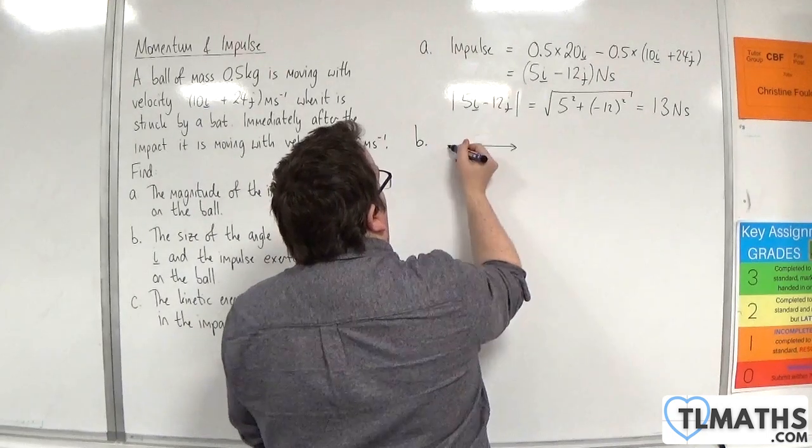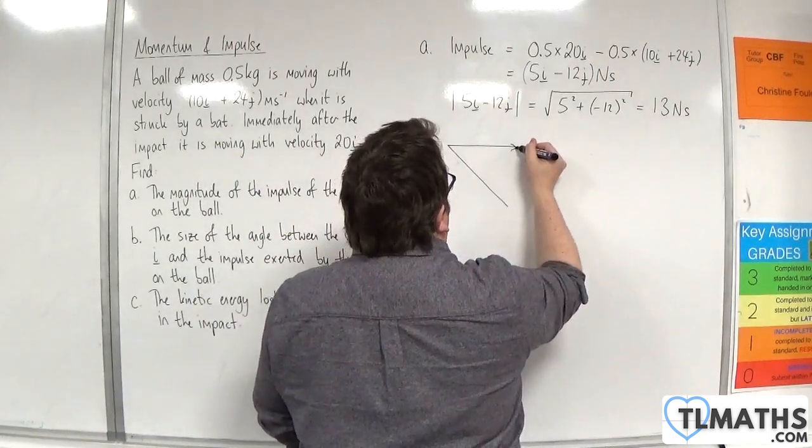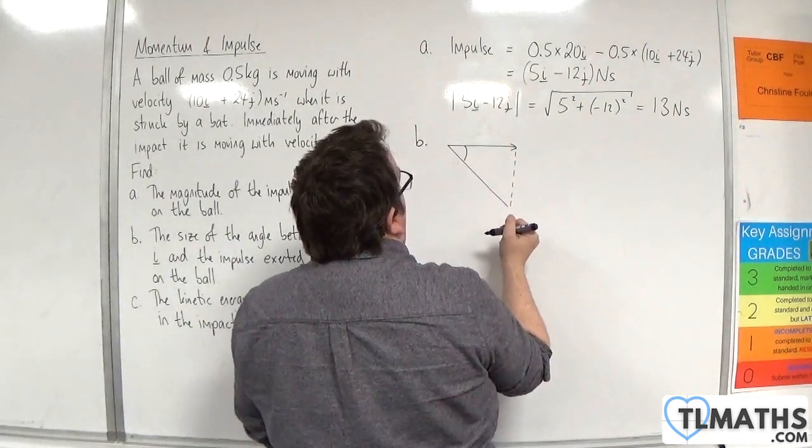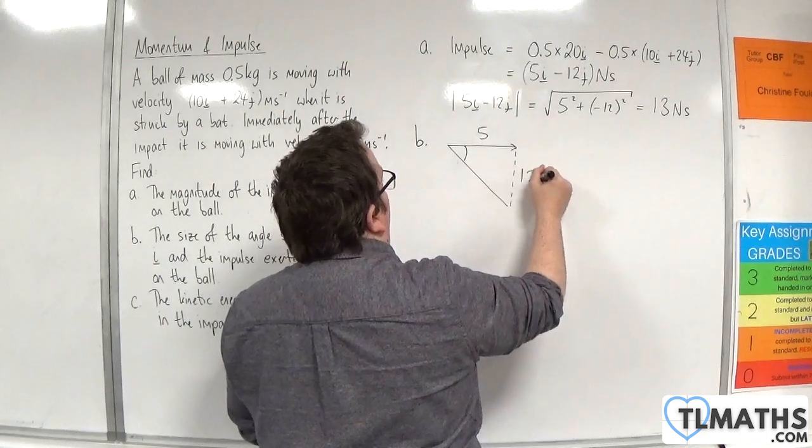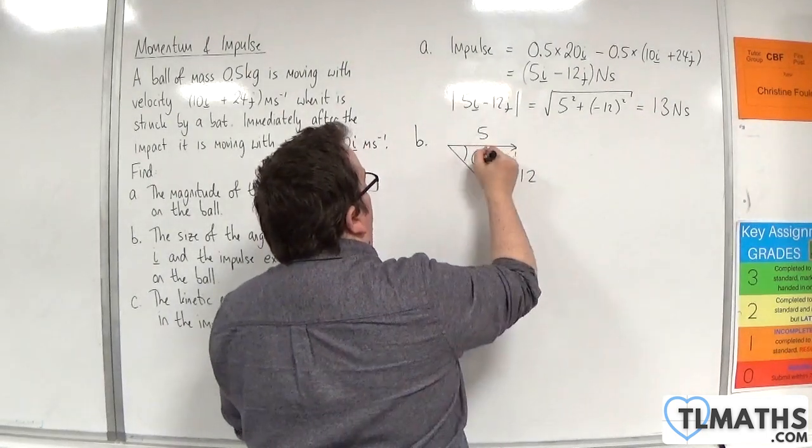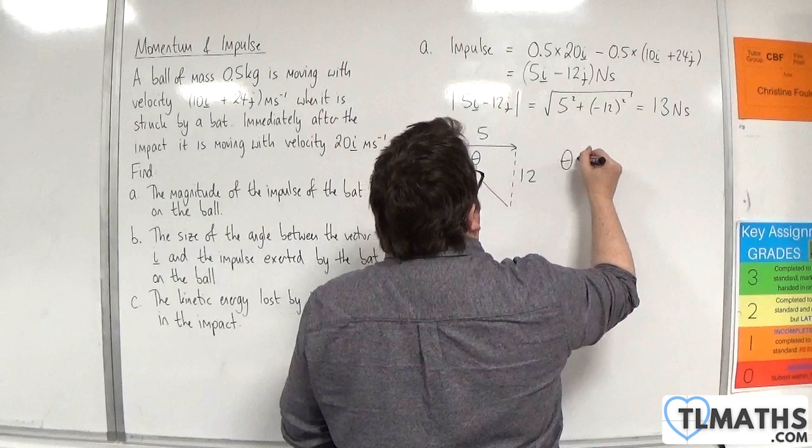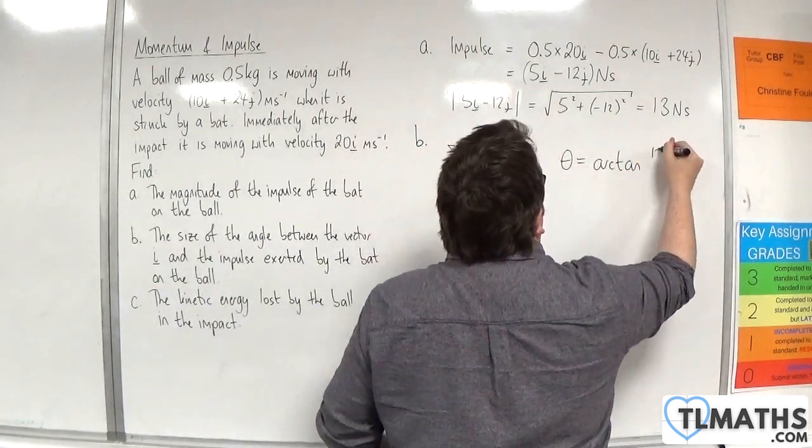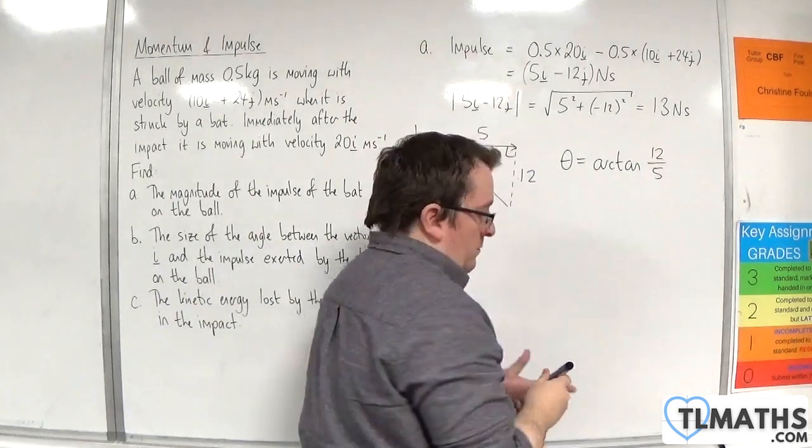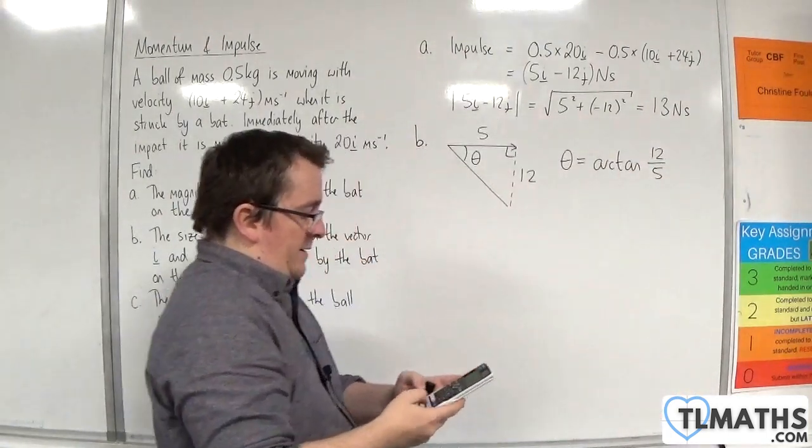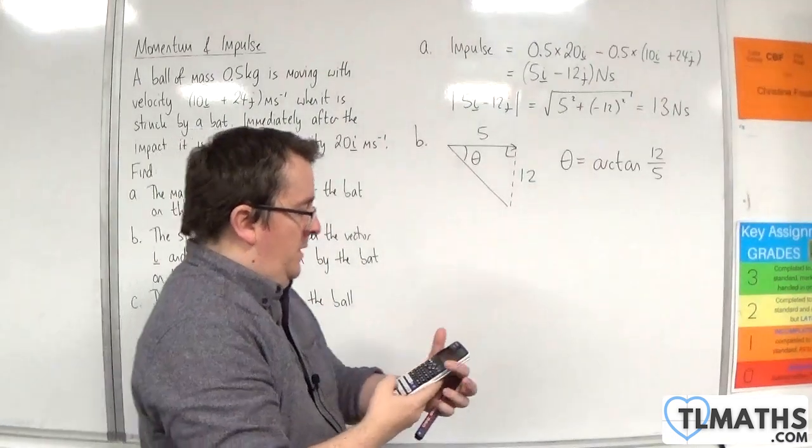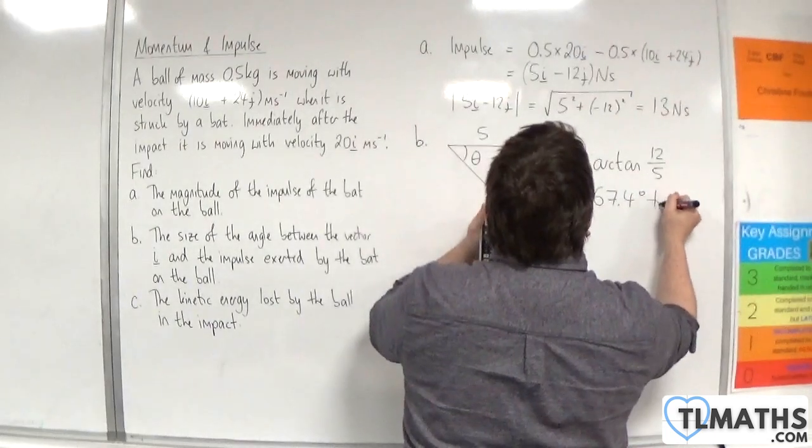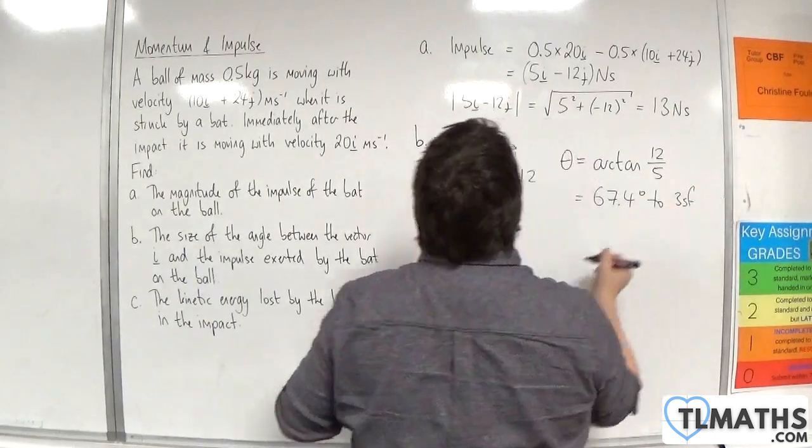Okay so essentially we are looking for this angle here. And we are going 5 along and 12 down. So this is my angle. So the angle is the arc tan of opposite over adjacent. So the inverse tan of 12 over 5 is 67.4 degrees to 3 significant figures.